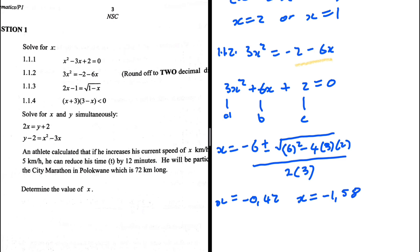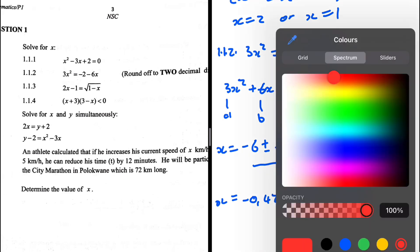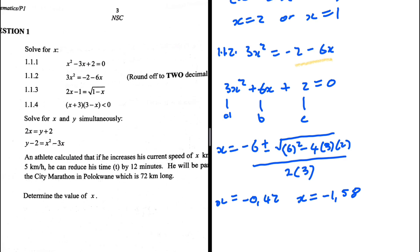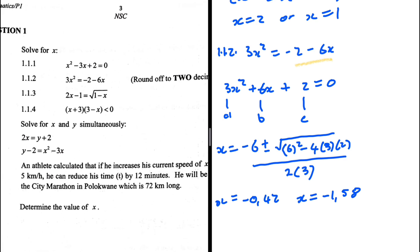That is our solution to 1.1.2. With the quadratic formula it's very easy to make a mistake in substitution or in determining a, b, and c. So let's verify and check if everything is fine. We take minus 6x to the left-hand side to get 3x squared plus 6x plus 2. That is perfectly fine — a is 3, b is 6, c is 2. No wrongdoing there.